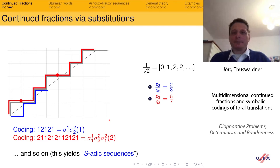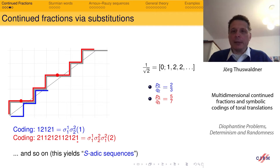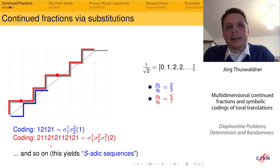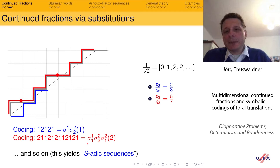These sequences are created by composing substitutions. If you do this ad infinitum, you get an infinite sequence, called an S-adic sequence — a sequence created by a sequence of substitutions. The sequence of substitutions is then called the directive sequence of the word produced.